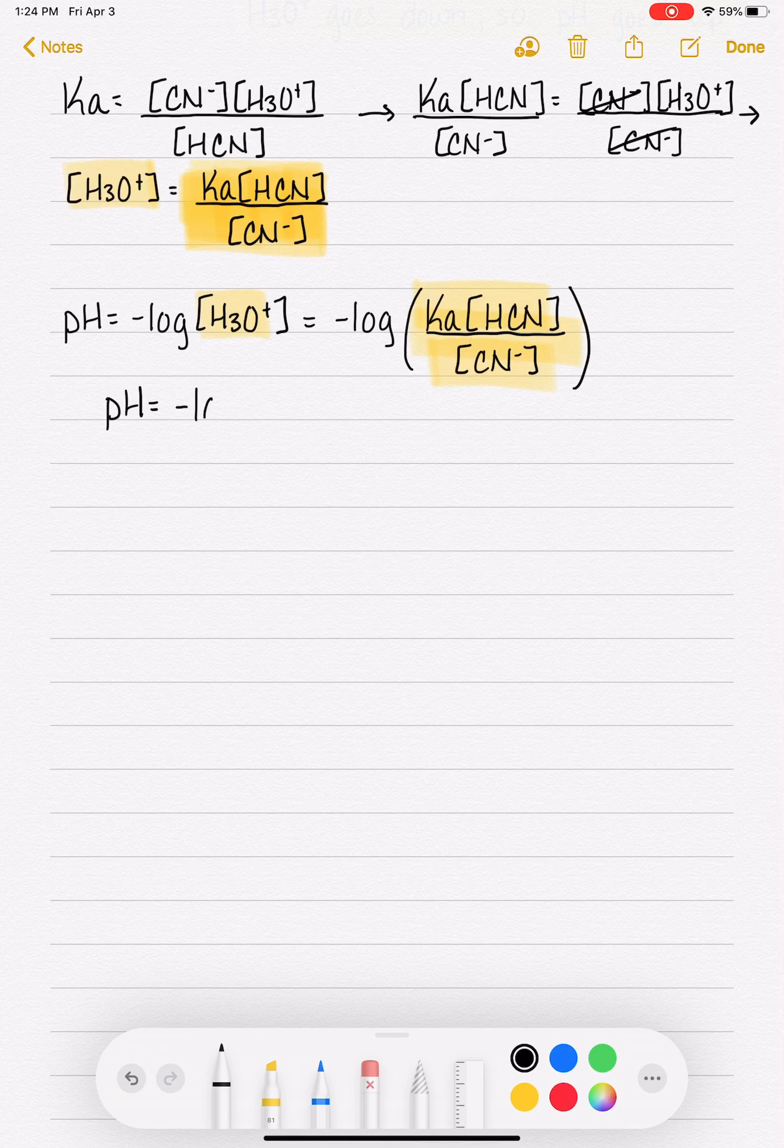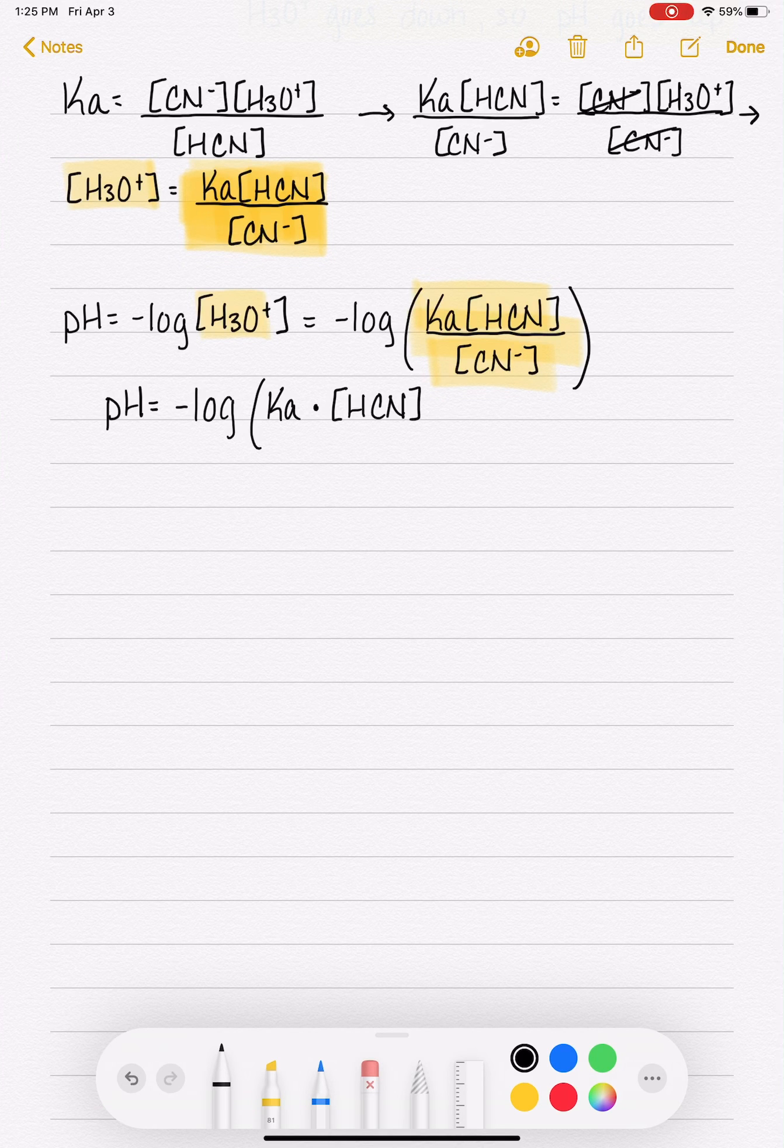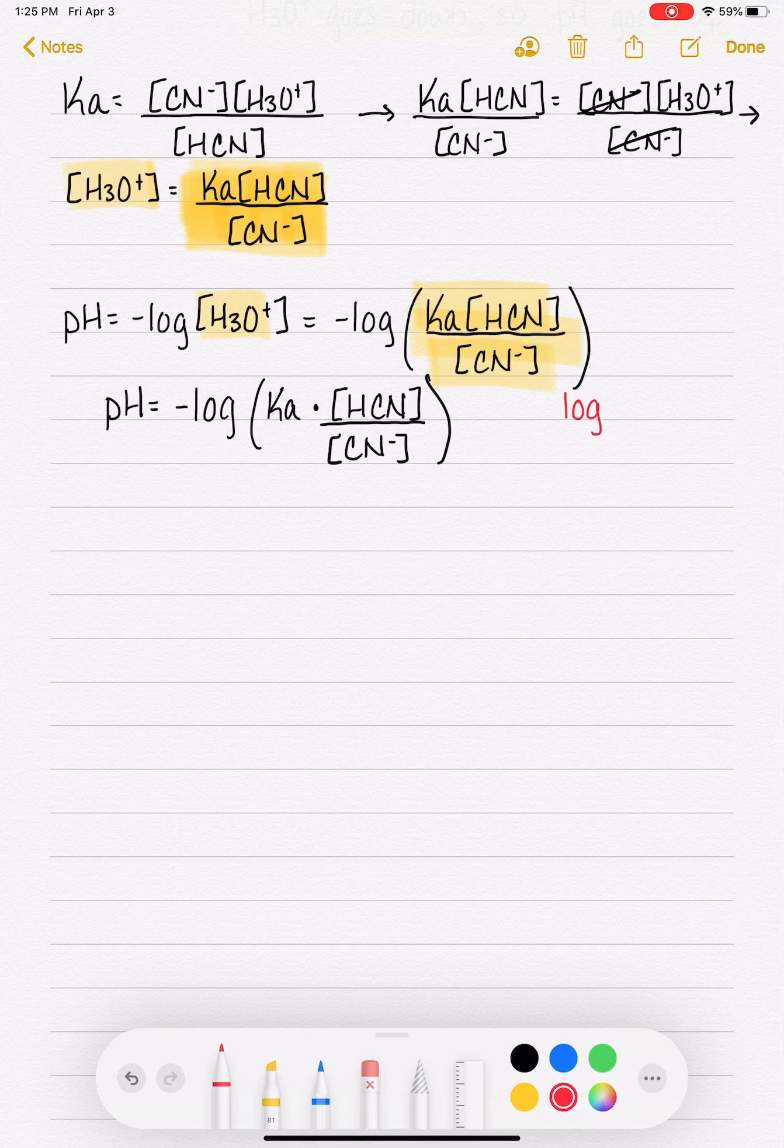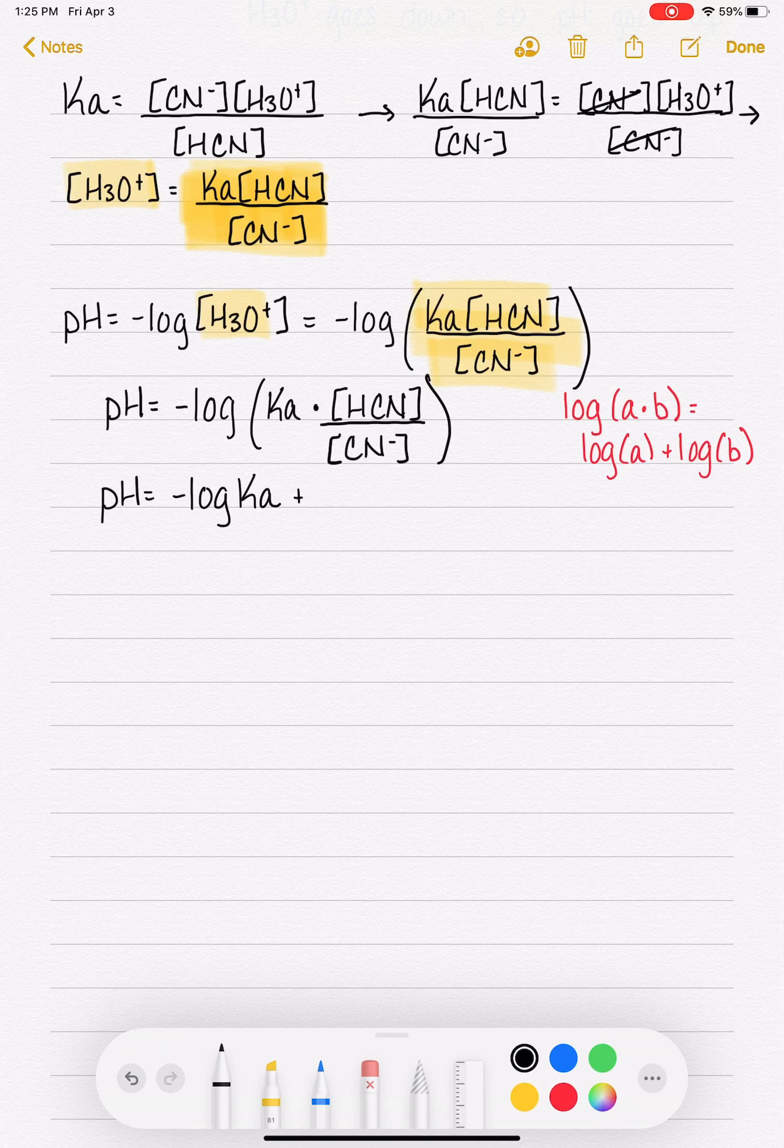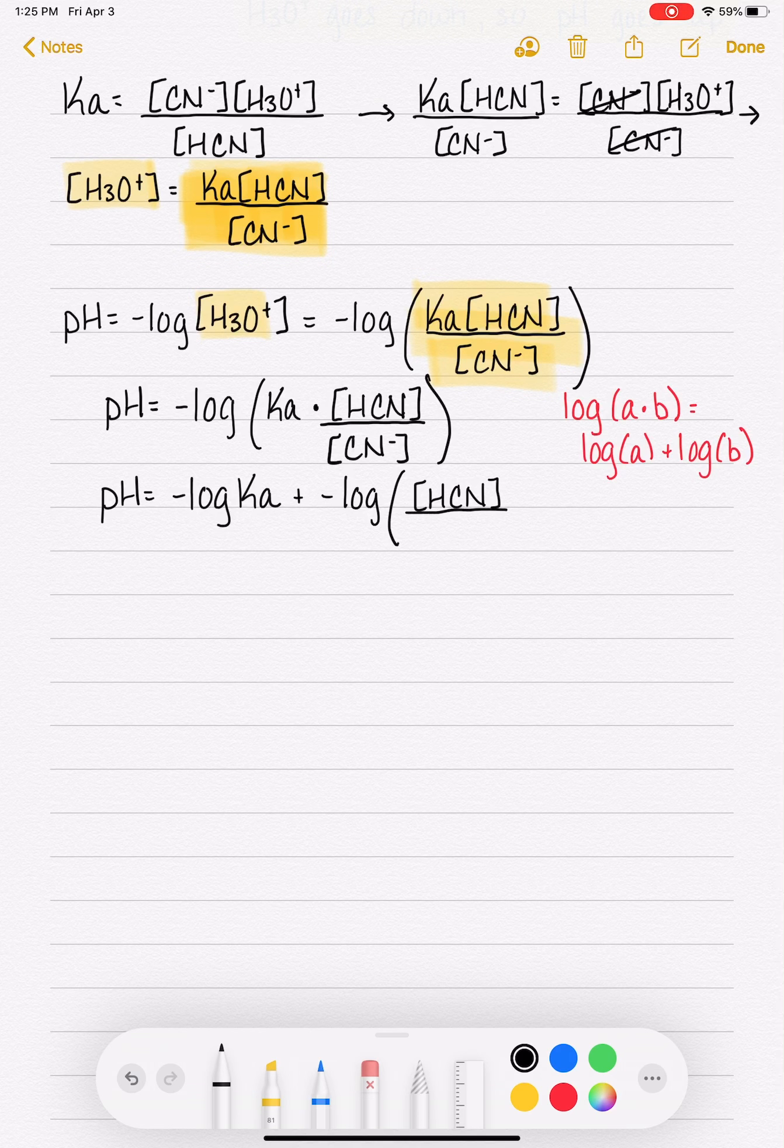Now, what I'm going to do next is use some properties of logs to simplify this equation that we've come up with. What we've come up with now is the pH is the negative log of Ka. I'm going to kind of spread out the Ka from the molecules: Ka times HCN over CN minus. So one property of logs is if you have the log of A times B, mathematically that's equal to the log of A plus the log of B. So I'm going to use that property of logs right now to separate the right side of the equation. So I'm going to get negative log of Ka plus the negative log of HCN over CN minus.